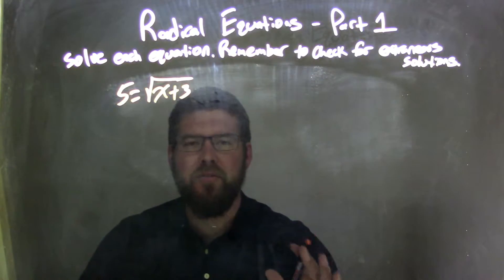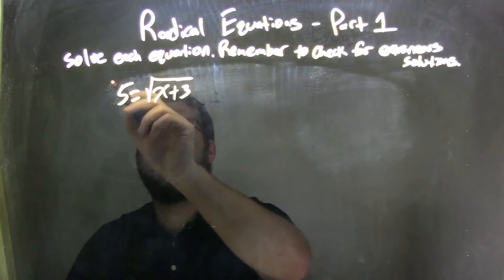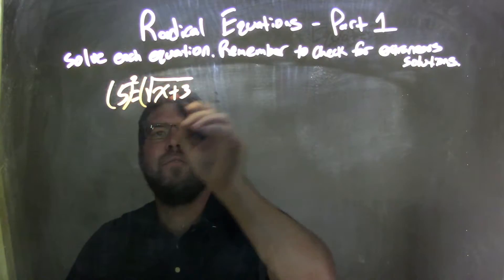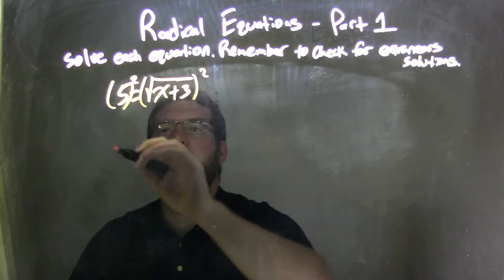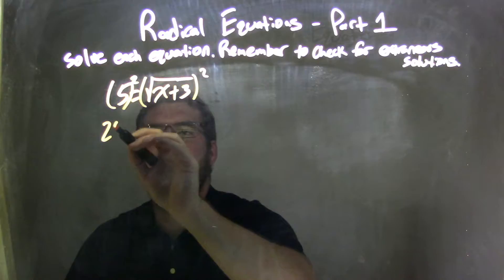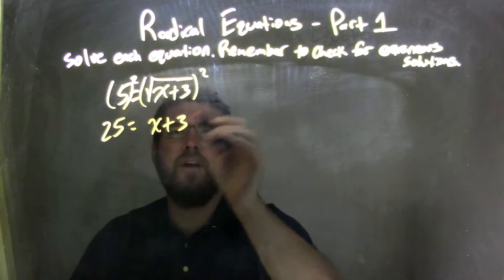So the first thing, to eliminate the square root, is I need to square both sides. I'm going to square both sides here. Square both sides, leaving me with a left-hand side 25 equals x plus 3, because squaring a square root eliminates the square root.